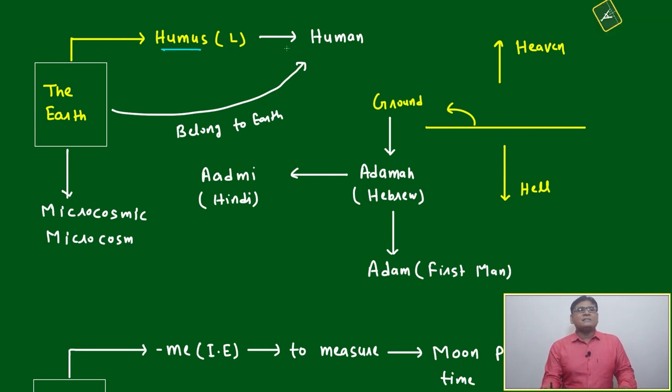The root word is humus, and based on the same root, it becomes human, due to those who belong to earth. They are human because related to humus. Microcosmic microcosm, another word for this Earth surface.